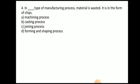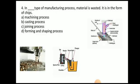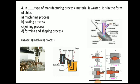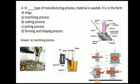Next question: in which type of machining process is material wasted in the form of chips? The answer is the machining process. Here you can see various processes — in machining, material is removed in the form of chips. In casting, material is melted and poured with no chips produced. In welding, two metals are melted and joined. The other is the forming or shaping process.